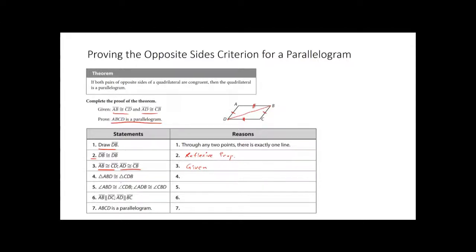So we're saying these two triangles are congruent — but by what triangle congruency? We have a side equal to this side, a side equal to that side, and then the diagonal we drew is congruent to itself. So we have side-side-side. This is by the Side-Side-Side triangle congruency theorem.